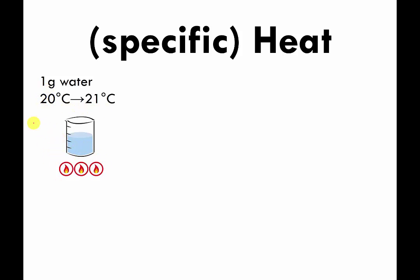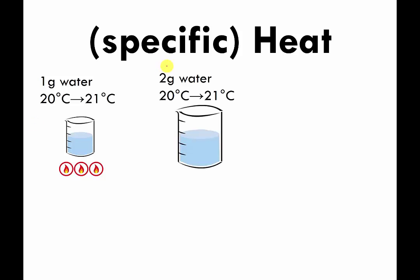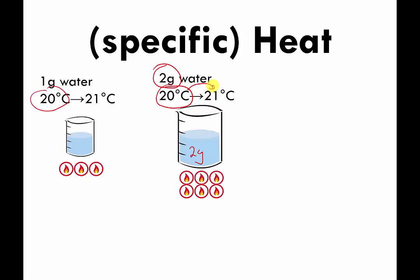Here's the first question: imagine that I have two grams of water — twice as much — also initially at 20 degrees Celsius, and I want to raise the temperature to 21 degrees Celsius. How many candles do I need to burn? If you said six candles, you're correct. The reason is there's twice as much water and you're raising the temperature by the same amount, so it stands to reason you need twice as many candles.